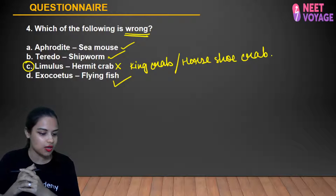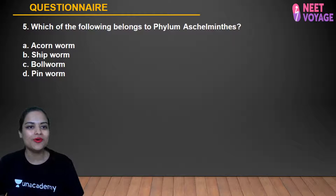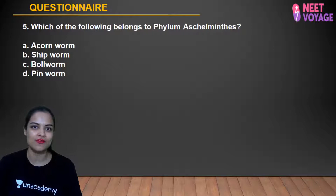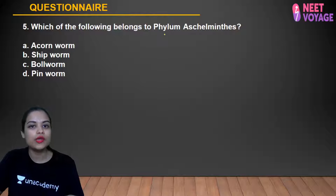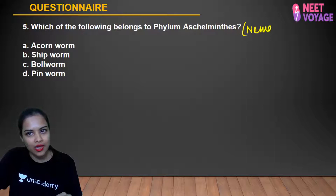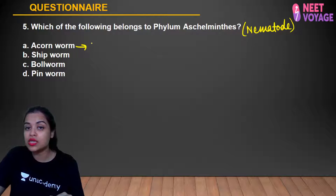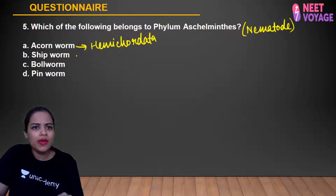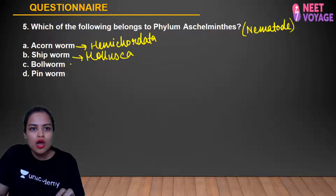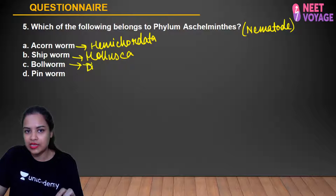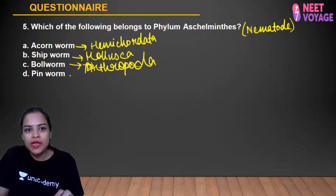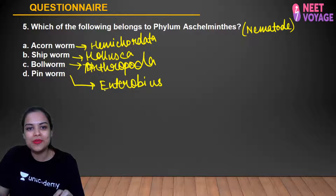Question 5: Which of the following belongs to phylum Aschelminthes (Nematoda)? Acorn worm/Balanoglossus belongs to Hemichordata. Shipworm belongs to Mollusca. Ballworm is a dipteran insect — Arthropoda. Pinworm is Enterobius, which belongs to Aschelminthes (Nematoda). So D is the right answer.